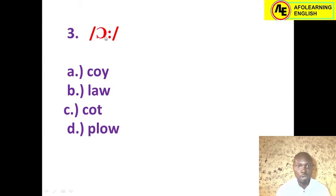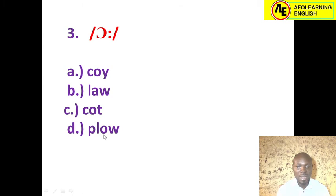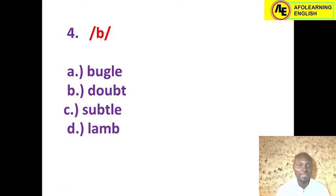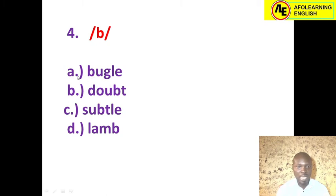Number three: the long /ɔː/. We treated something similar in 2017. 'Oi' — no, that's a diphthong; we need a monophthong. 'Law' — yes, correct answer. 'Cut' — no. 'Plow' — no. The correct answer is law. Number four: the consonant sound /b/. Be careful of silent letters — pronounce words before choosing. Option A 'bugle' — yes, contains /b/. Option B 'doubt' — letter B is silent. Option C 'subtle' — B is also silent.